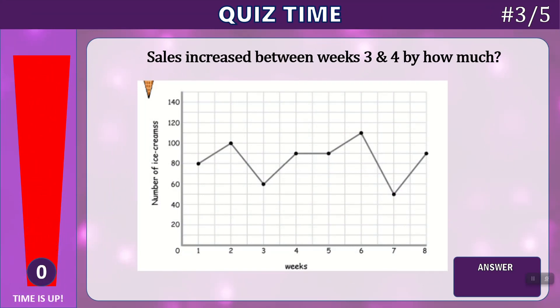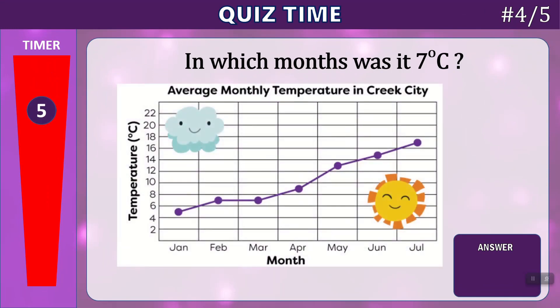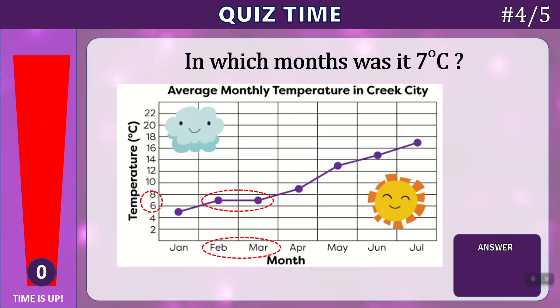Time's up. If you locate weeks three and four, you can see week three was 60 and week four was 90 — between 80 and 100. The difference between 60 and 90 is 30. Question four: In which months was it seven degrees Celsius? You have five seconds. Time's up. Between 6 and 8 is 7, and if we look across to the graph, we can see there are two months — February and March.